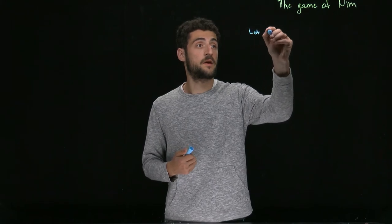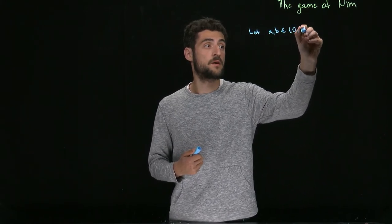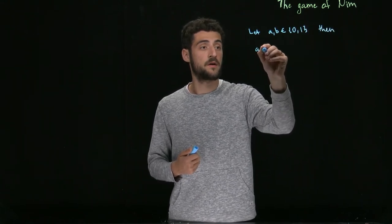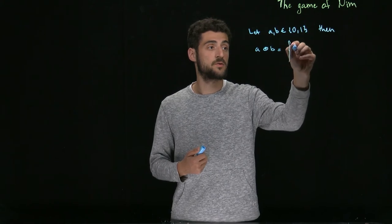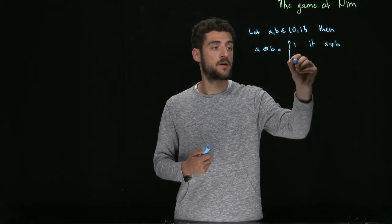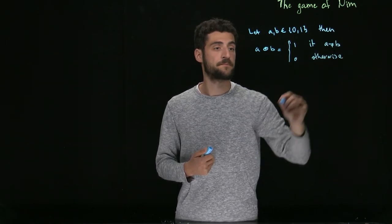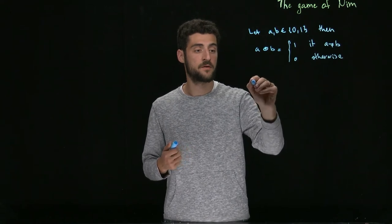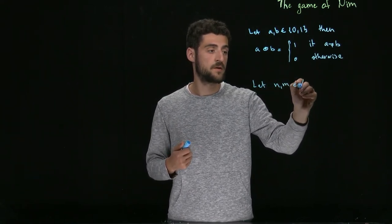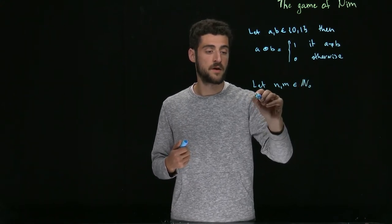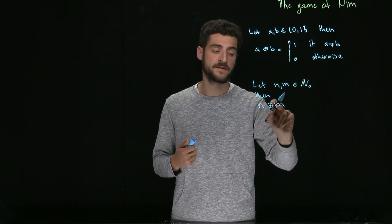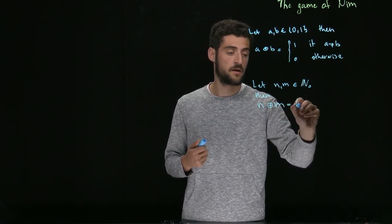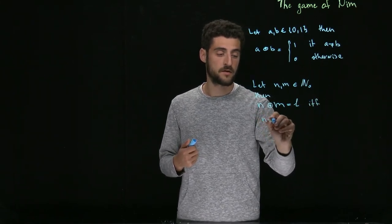Another ingredient we need is the notion of the NIM sum. Let a and b be zero or one. Then a NIM sum b, also known as the XOR operation, is equal to one if a is not equal to b, and zero otherwise. Alternatively, if you have two numbers n and m — some non-negative integers — then n NIM sum m, or n bitwise XOR m, is equal to l if and only if the digits satisfy: l's kth digit equals the XOR of n's kth digit and m's kth digit.